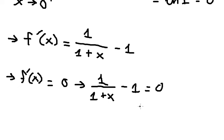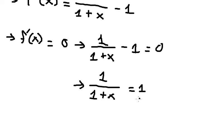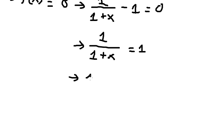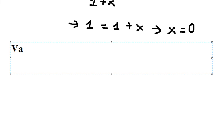So I will put negative 1 to the right. We get 1 minus 1, which gives 0. Now we need to consider the variations.